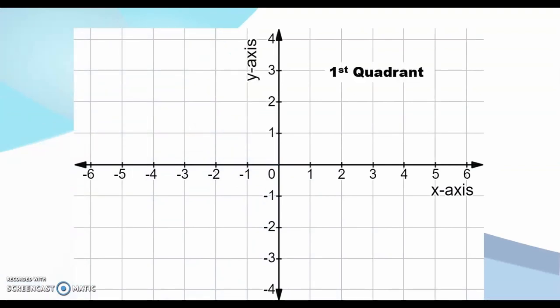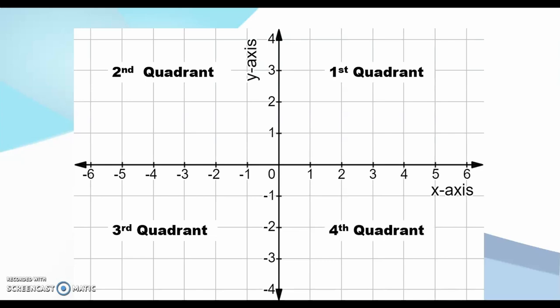In a Cartesian plane, there are four quadrants. The upper right-hand side refers to the first quadrant, the upper left-hand side the second quadrant, the lower left-hand side is our third quadrant, and our lower right-hand side is our fourth quadrant.